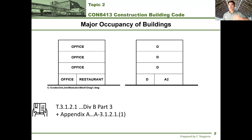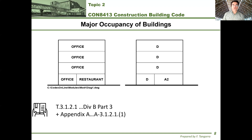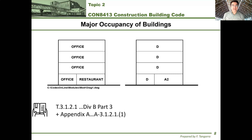In our case, as it relates to 3.1.2.1, if you go to Appendix A and look that up — labeled A-3.1.2.1, where the A stands for Appendix A — it will explain in plain English what that means. Specifically, under Sentence 3.1.2.1.1 in Appendix A, it lists examples of each occupancy group and division over two pages, so you don't have to guess. On Brightspace, I've also provided scans of those two pages so you know exactly where to find them.